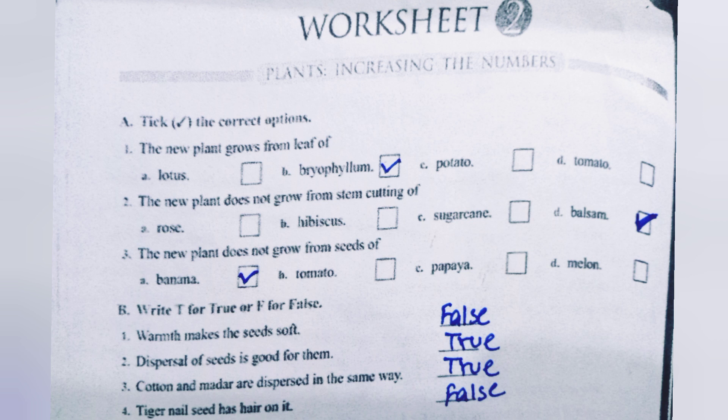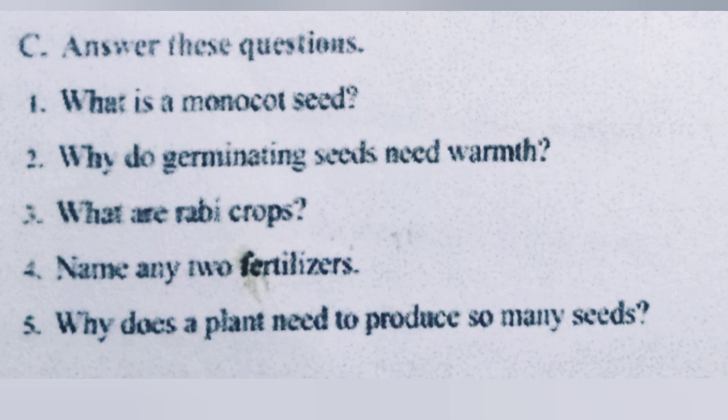Part B: write T for True or F for False. First: warmth makes the seeds soft — that is False. Second: dispersal of seeds is good for them — that is True. Third: cotton and madar are dispersed in the same way — that is True; both are dispersed by wind. Fourth: tiger nail seed has hair on it — that is False.